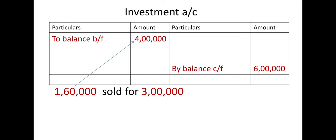For what price have we sold? We have sold for rupees 3 lakhs. So we got more amount — that is a profit. Let me repeat: we already have investment worth rupees 4 lakhs at the beginning of the year, and out of that we have sold investments worth rupees 1 lakh 60,000, and the selling price of that investment is 3 lakhs.